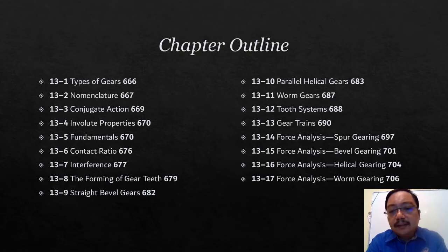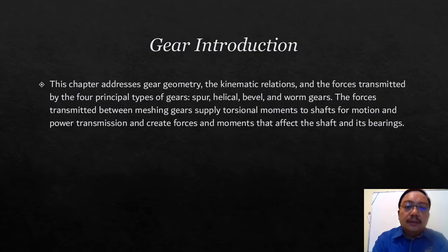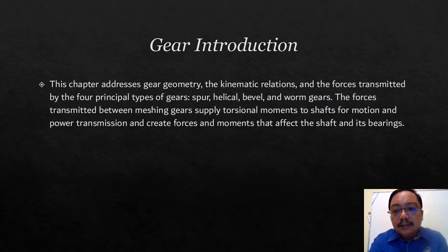The outline continues with parallel helical gears, bevel gears, tooth system, gear trains, force analysis, spur gearing, force analysis for bevel gearing, force analysis for helical gearing, and force analysis for worm gearing. The address covers gear geometry, kinematic relations, and forces transmitted by the four principal types of gear: spur, helical, bevel, and worm gears.